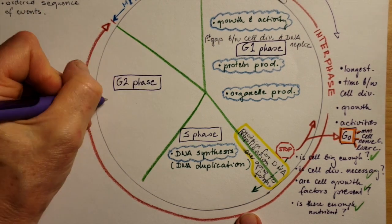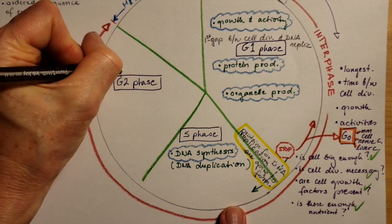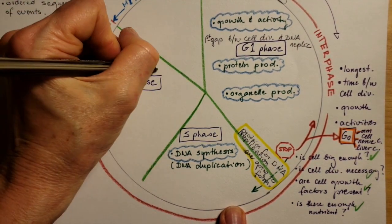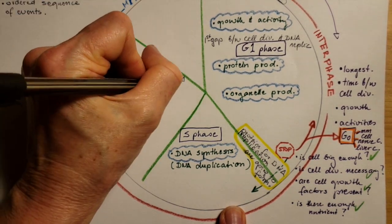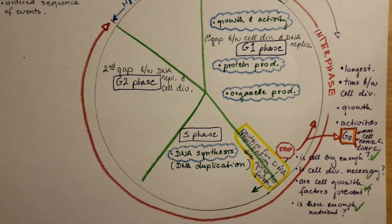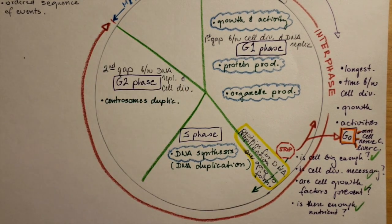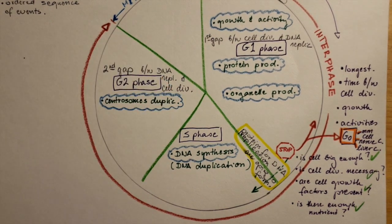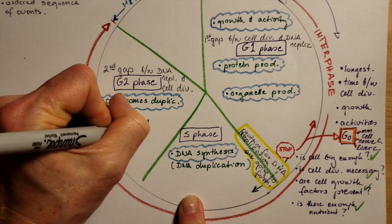The third phase in the interphase is the G2 phase. This is the second gap between replication of the DNA or duplication of the DNA to cell division. During that phase, the cell is duplicating its centrosomes, the animal cells, because they are important for cell division. These are the anchors that will spread out their spindle fibers.